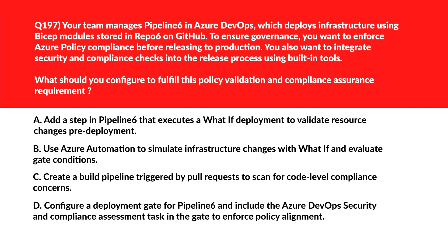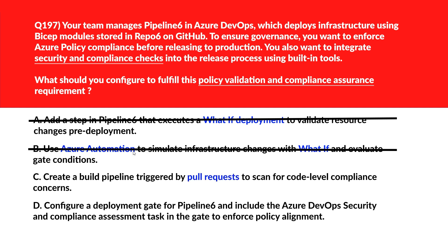Now a classic question on GitHub and DevOps. Option A: the 'What If' step offers visual insight into changes but doesn't integrate formal compliance validation — incorrect. Option B: using Azure Automation to simulate infrastructure changes with 'What If' and evaluate gate conditions — Azure Automation with 'What If' can simulate results but isn't natively wired into the Azure DevOps security compliance scanning framework.